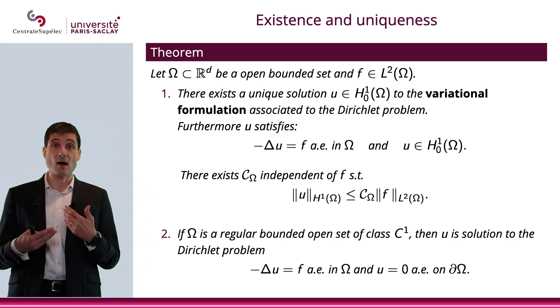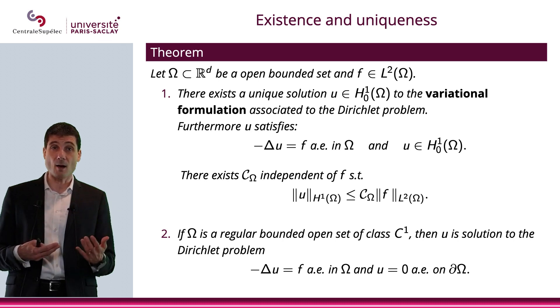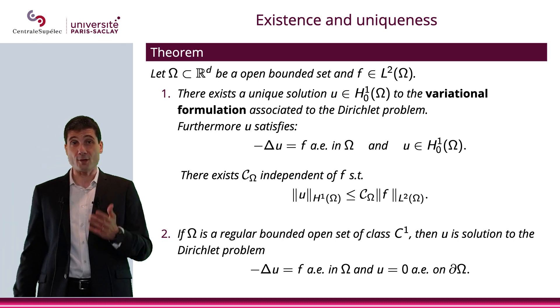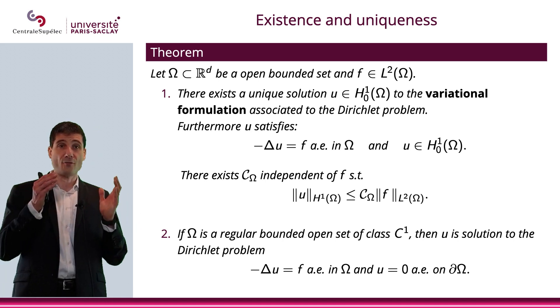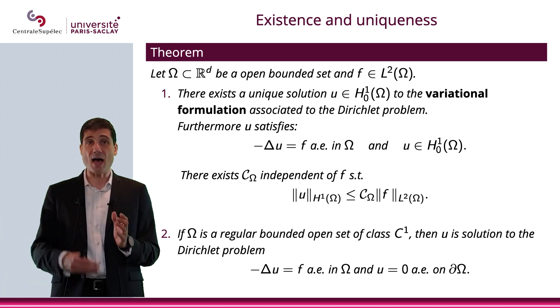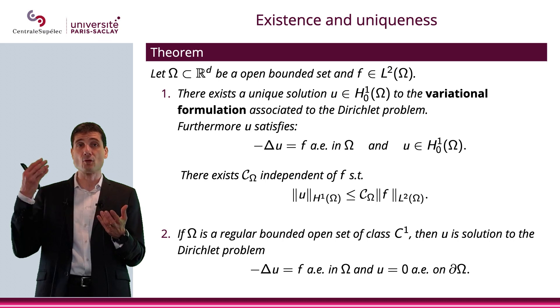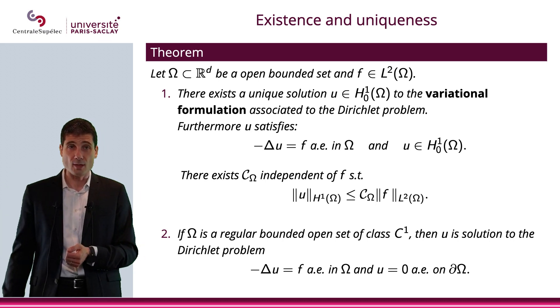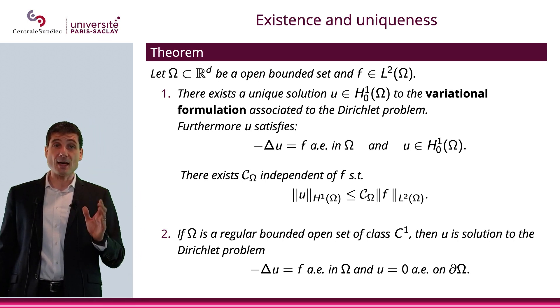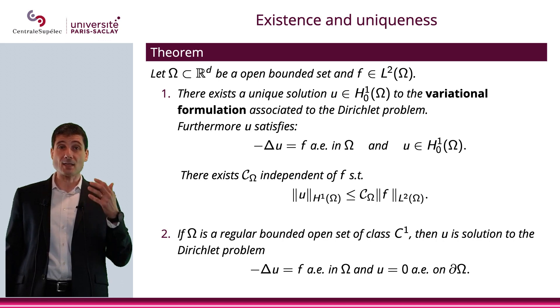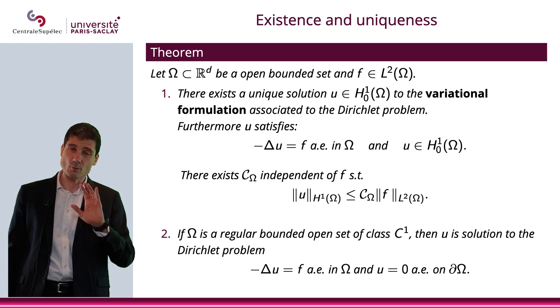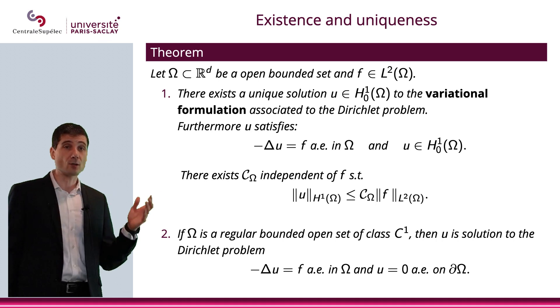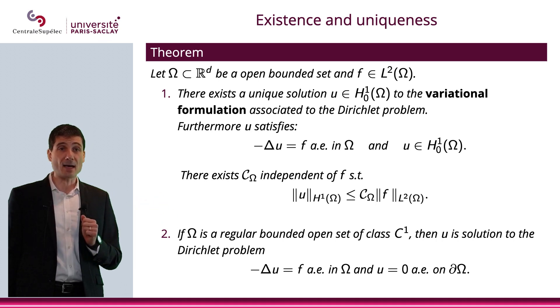On top of this, we'll have u that will satisfy minus Laplace operator applied to u equals f almost everywhere in omega and u in H^1_0. We'll have the smooth dependence with respect to the data. There exists a constant c_omega independent of f such that the norm of u in H^1 is bounded by this constant times the norm of f in L^2. Finally, if omega is a regular bounded open set in C^1, then u is a solution to the Dirichlet problem: minus Laplace u equals f almost everywhere in omega and u equals 0 almost everywhere on the boundary.